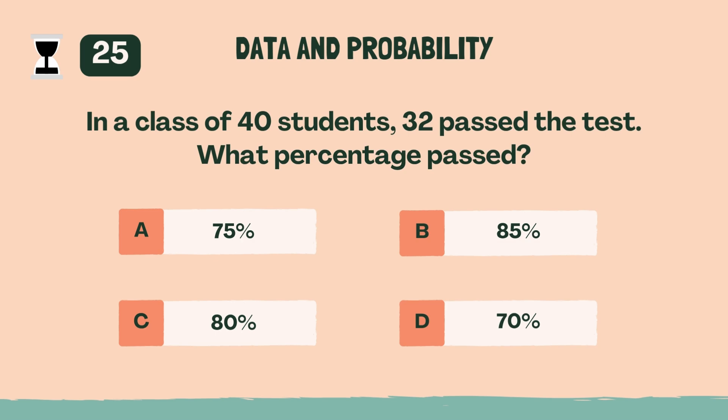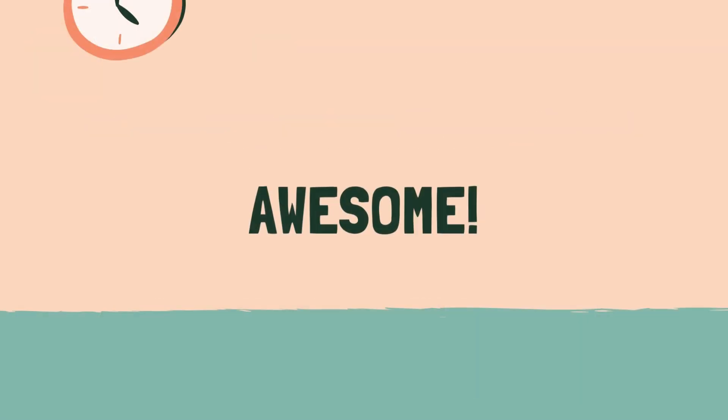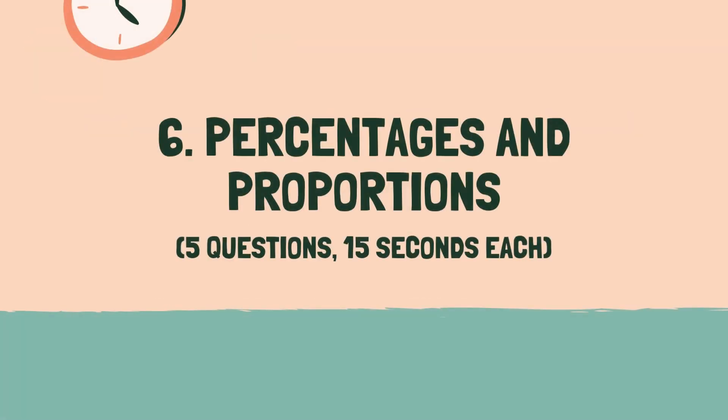In a class of 40 students, 32 passed the test. What percentage passed? C, 80%. Awesome. Last category coming up. Category 6, percentages and proportions. Three, two, one, go.